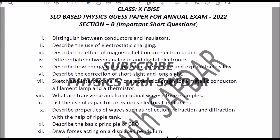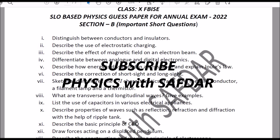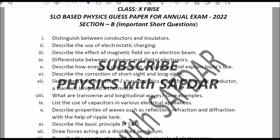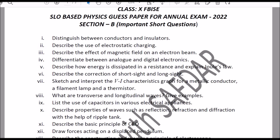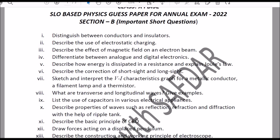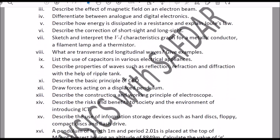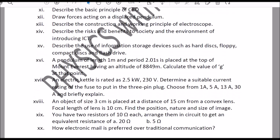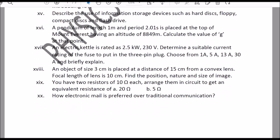This is an SLO-based physics guess paper for annual exam 2022. This is Section B: important short questions. I suggest you start learning these question answers so you would do well in your exams. There are 20 short question answers in this paper.